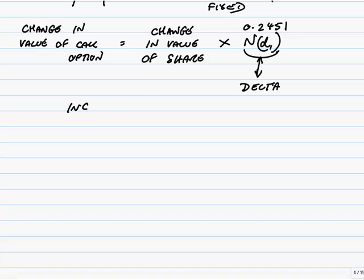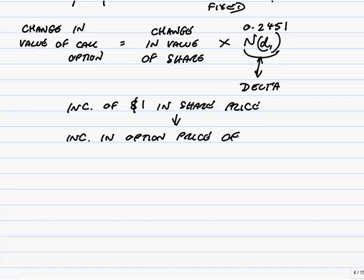It'll only go up by $1 times 0.2451. So an increase of $1 in the share price, for this particular example, would mean an increase in the option price of $0.2451 times a dollar, nearly $0.25.